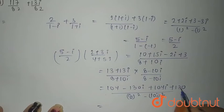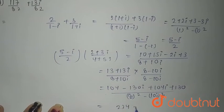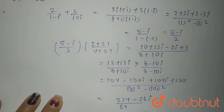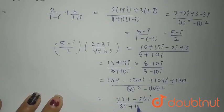Now 104 plus 130 is nothing but 234 minus 26 iota divided by 64, 64 minus 100 and iota square is nothing but minus 1. That comes out to be plus 100.